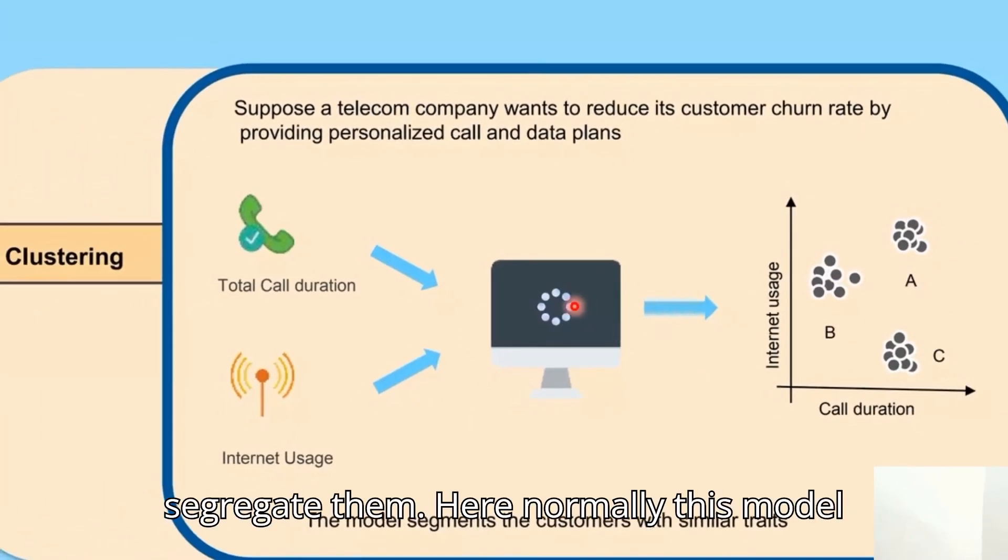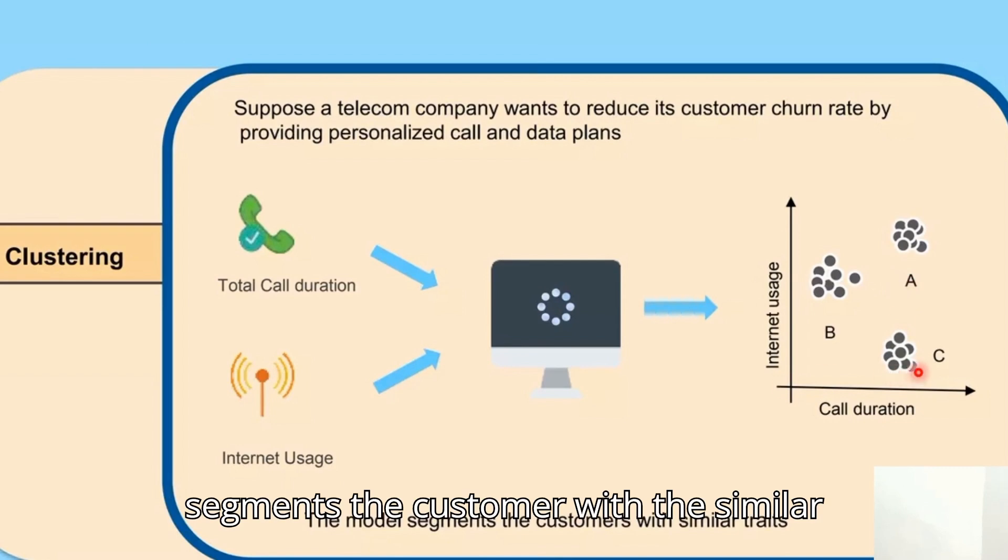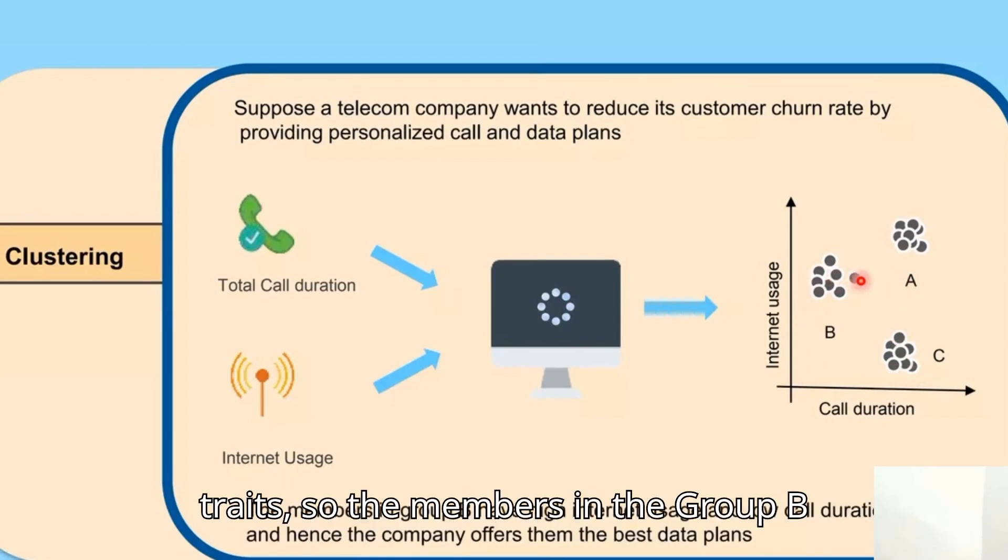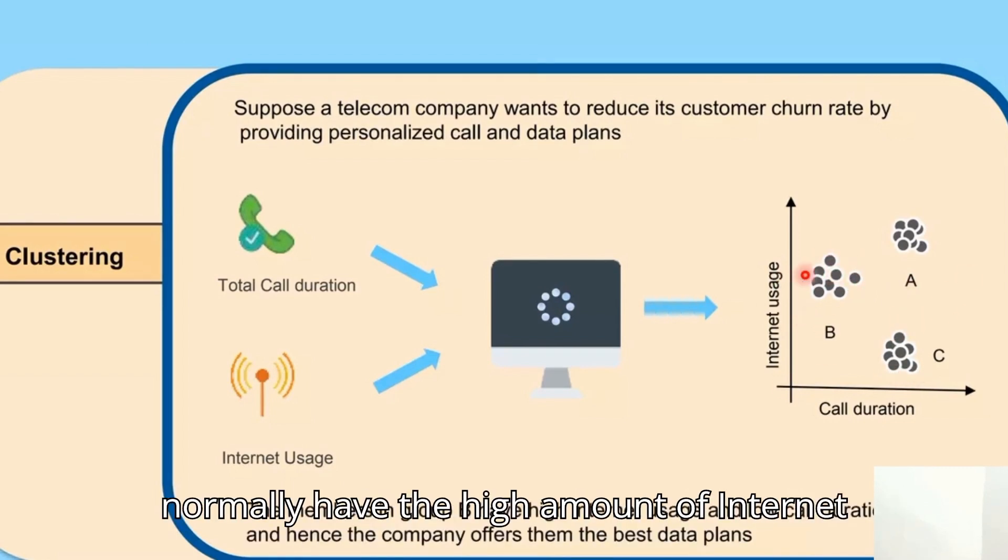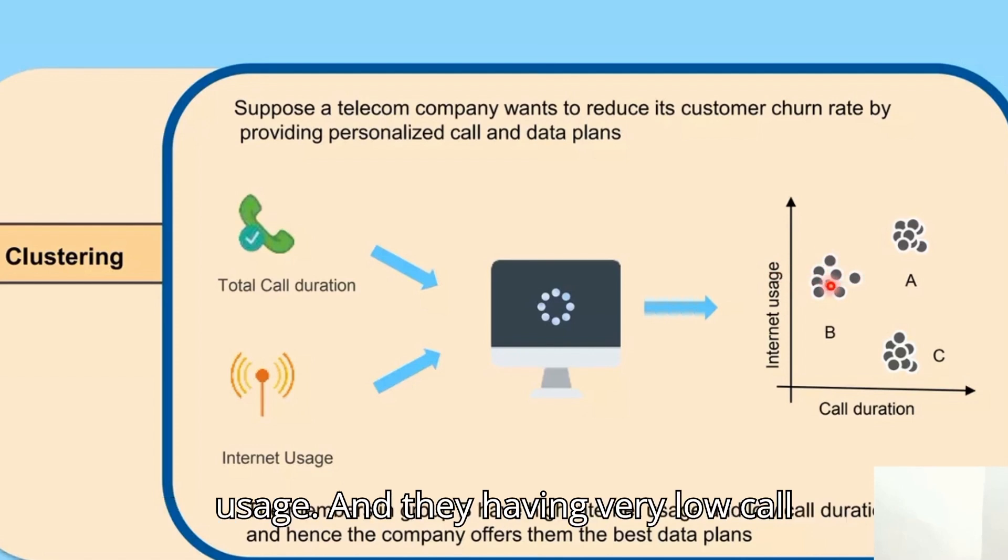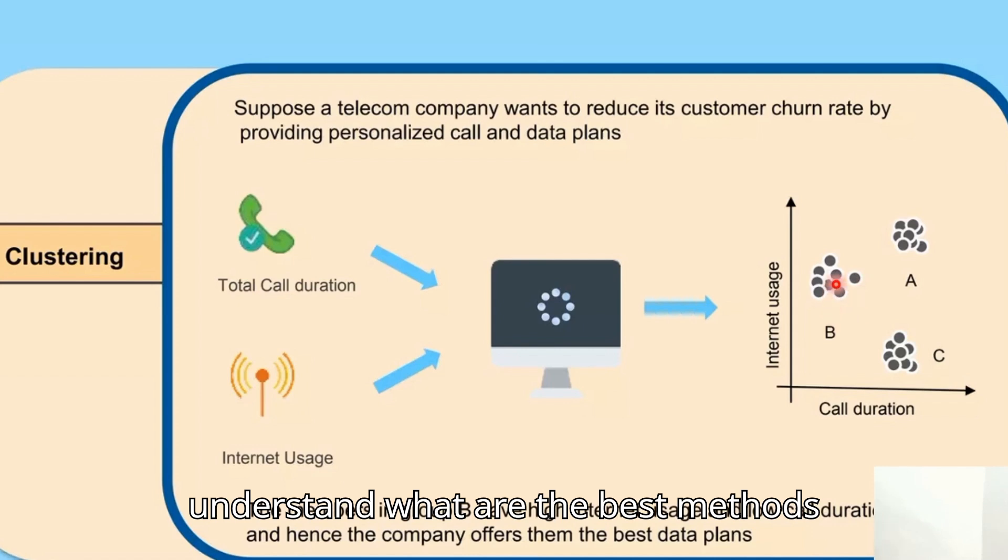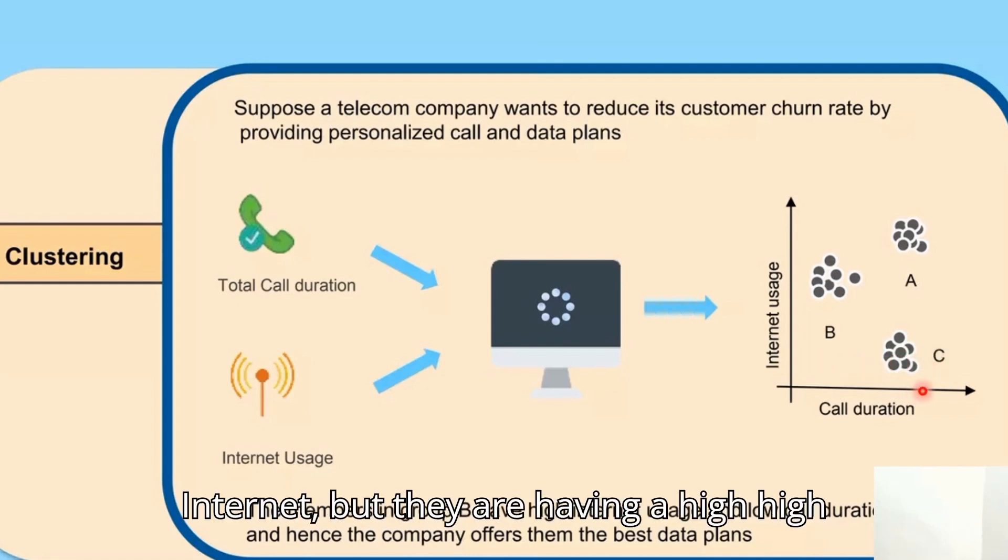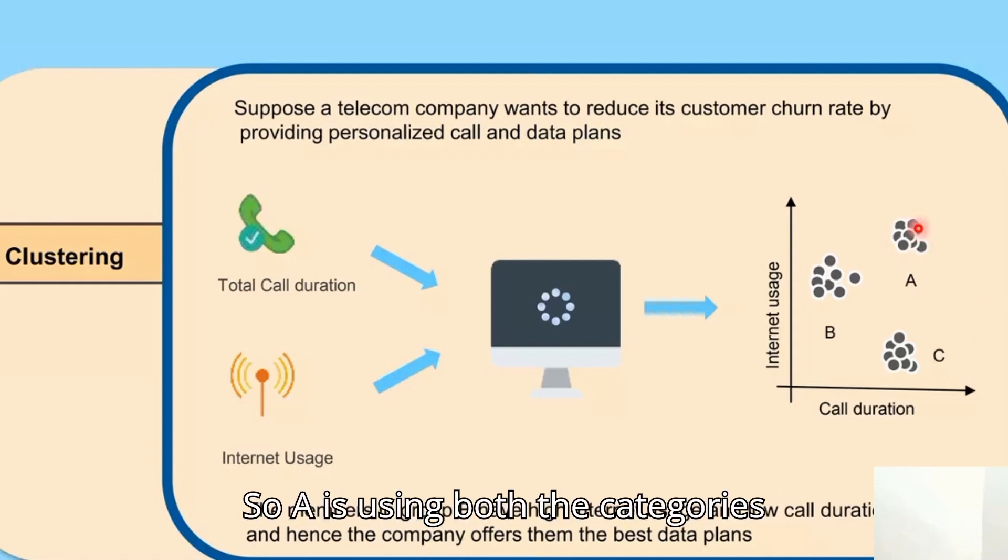Based on the clustering rule, we segregate them. This model segments customers with similar traits. Members in group B normally have a high amount of internet usage and very low call duration. The company can clearly understand what methods suit them. Category C has very low internet usage but high call duration usage.